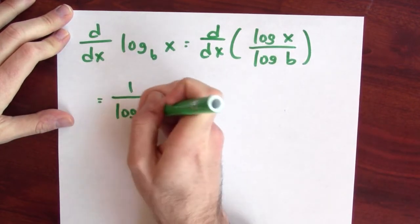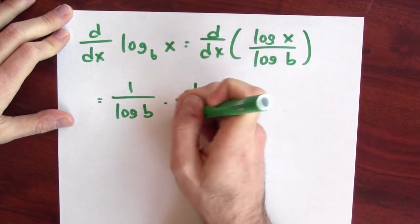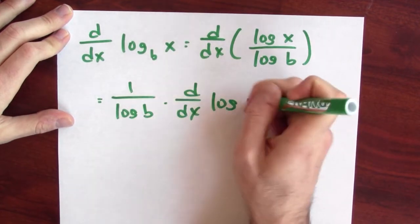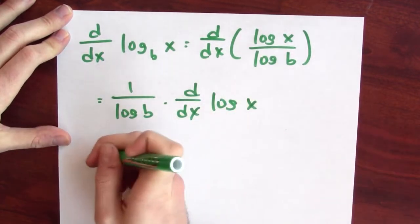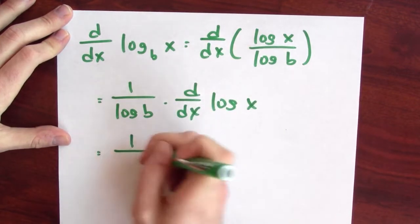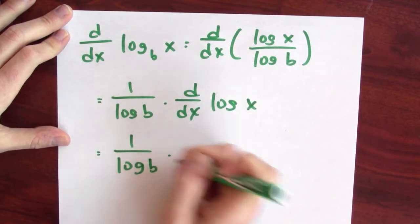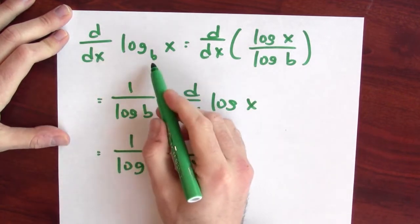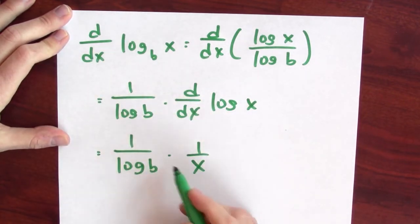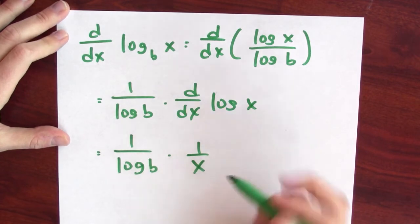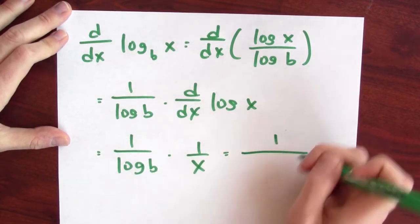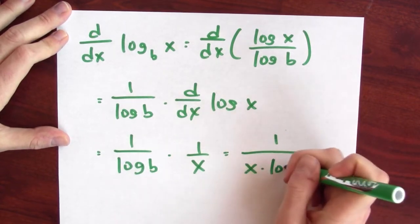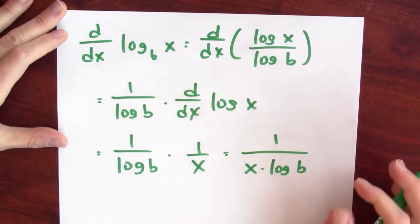So this is 1 over log b times the derivative of the natural log of x. But I know the derivative of the natural log of x. It's 1 over x. So the derivative of log of x base b is 1 over log b times 1 over x. Or maybe another way to write this would be 1 over x times log b, if you prefer writing it that way.